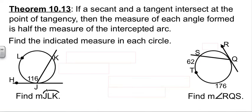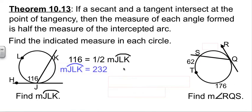So if I want to find arc JLK, this big arc, the angle will be half of that arc. So divide by half, same as multiplying by 2. That gives me 232 for that one.